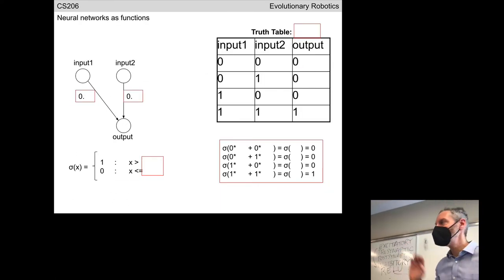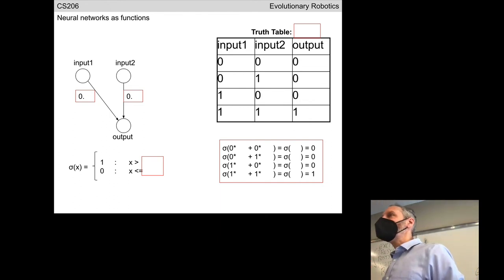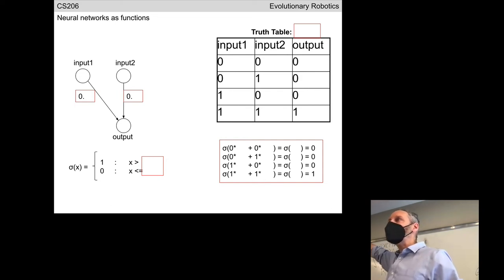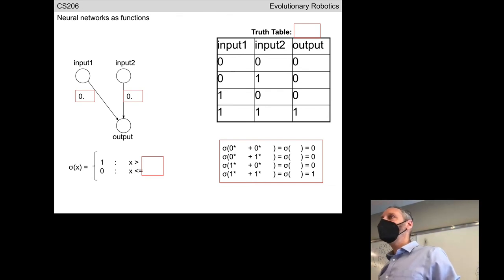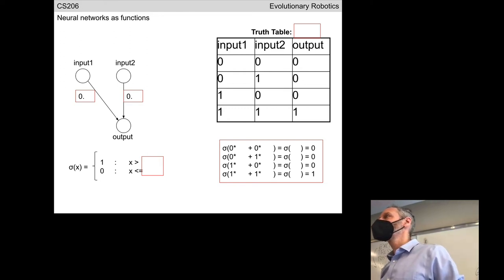Any questions about that? Okay. It's important to remember that regardless of whether we're talking about deep networks or neural networks controlling robots, essentially what a neural network is doing — no matter how big and complicated — is computing a function. The input to the function is the values arriving at the input layer, and the output of the function is the value or values arriving at the output layer.